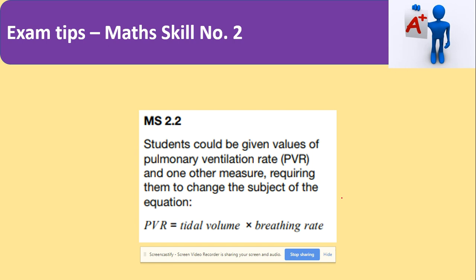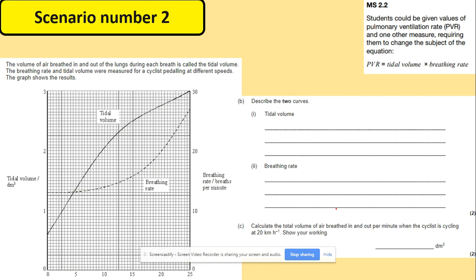Another key math skill is that you might be able to look at the pulmonary ventilation rate, which is the equation tidal volume times breathing rate. I found one question that is asking you about this. Firstly, they're asking you to describe the two curves. Be careful when you've got graphs like this, because you've got the tidal volume here and you've got the breathing rate per minute there. Different curve for the breathing rate and different curve for the tidal volume. And also, you've got different values on those y-axes. That's something that you need to pay attention to.